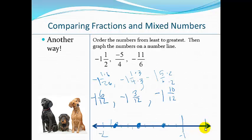And this helps us also see that, remember, 0 is over here. Which order is closest to 0? So my negative 1 and 3 12ths is the biggest. My negative 1 and 10 12ths is the smallest. It still puts us in the same order. Negative 11 over 6. Negative 1 and 1 half. Negative 5 over 4.